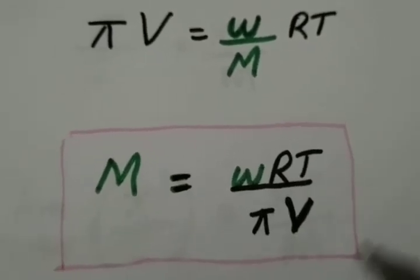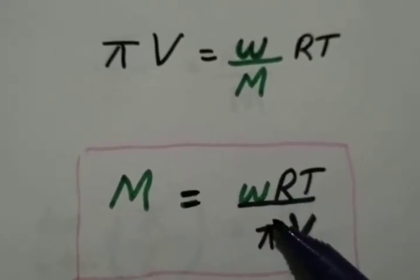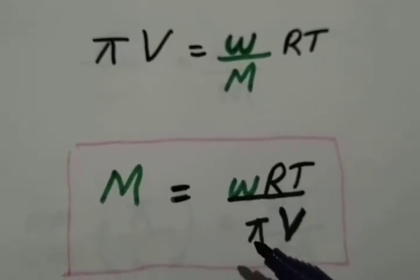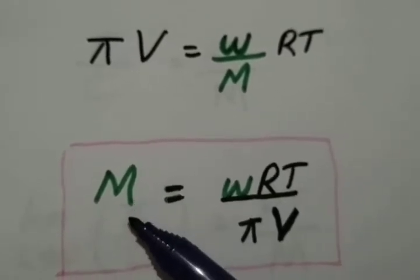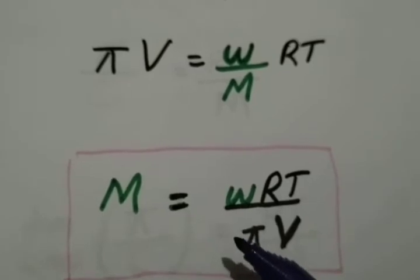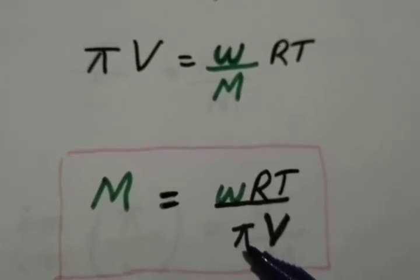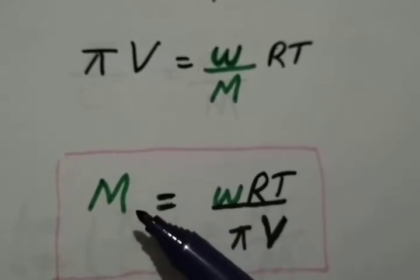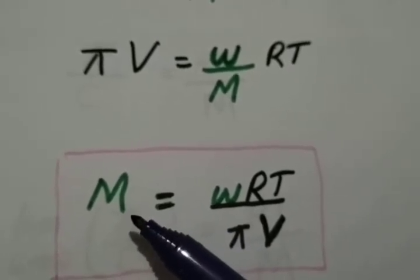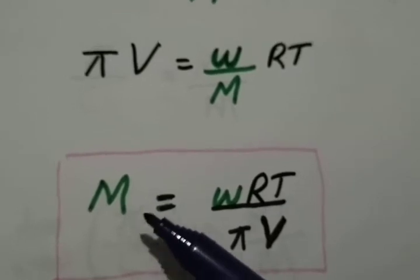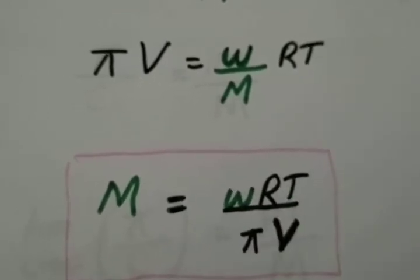Therefore, M is equal to WRT divided by πV. So we can determine molecular mass of the solute by using Van't Hoff equation, osmotic pressure equation. This equation shows the relationship between the molecular mass and the osmotic pressure of the solute.